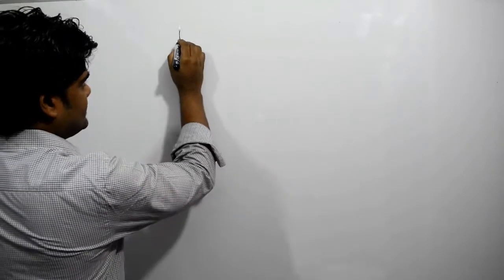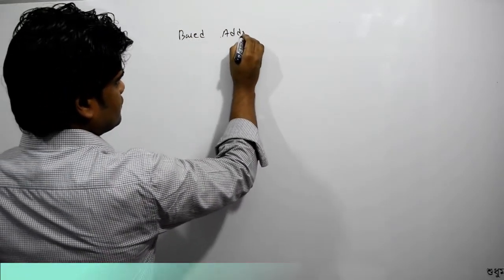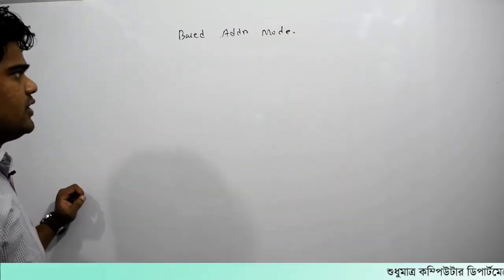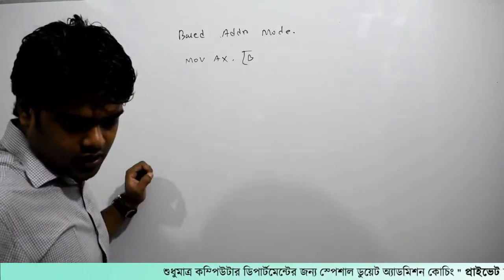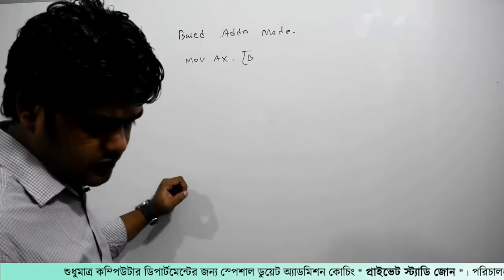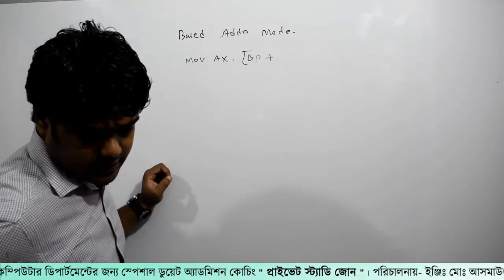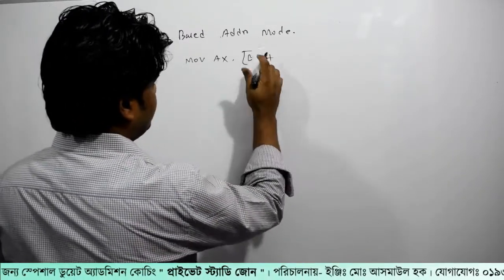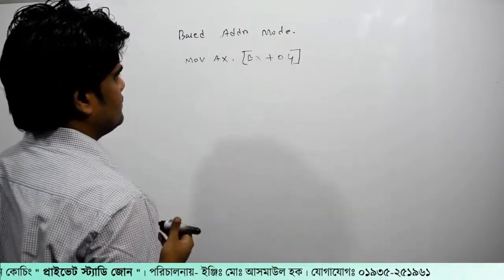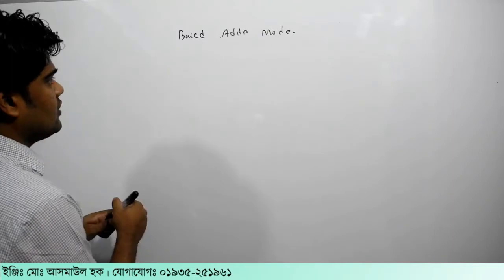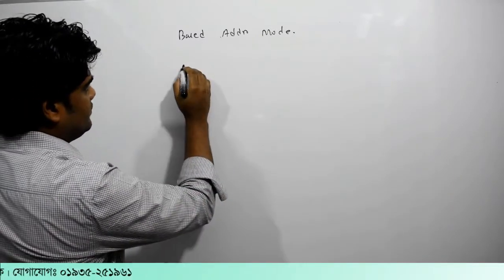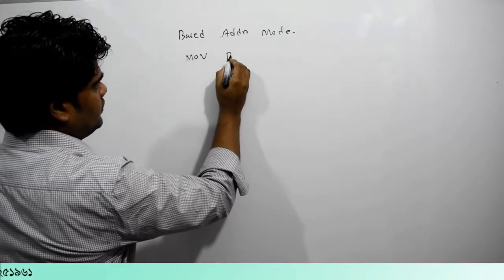The last addressing mode is the most interesting mode. This is the best addressing mode — you will see the same information. I am going to write the instruction: move ax, bp plus bx plus 0,4. This is the based indexed addressing mode with displacement.